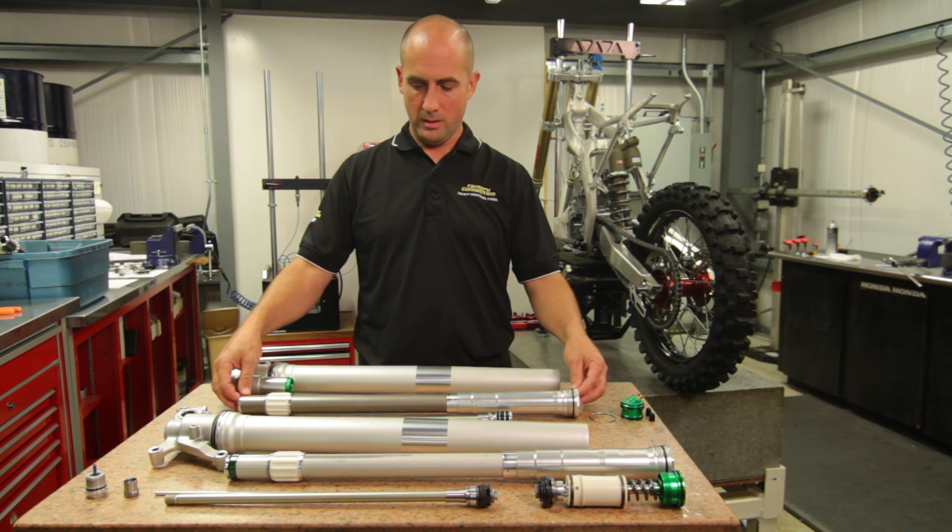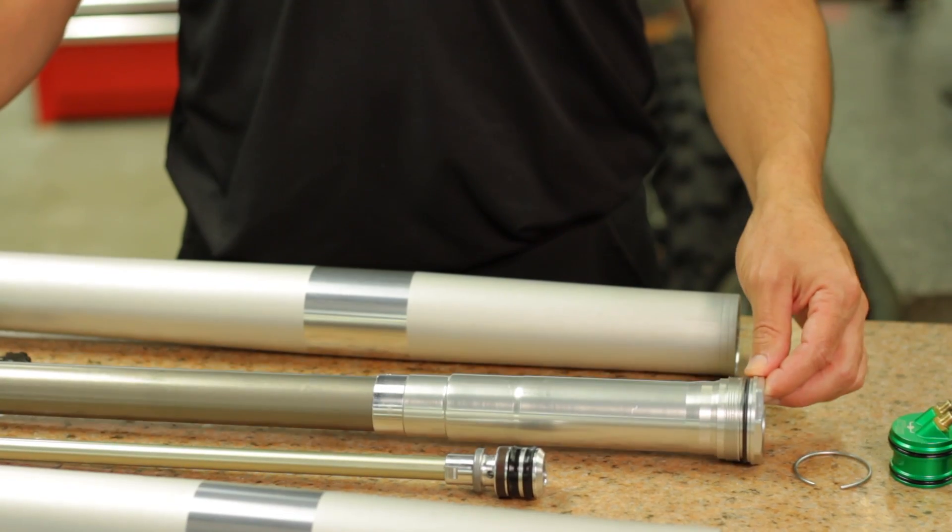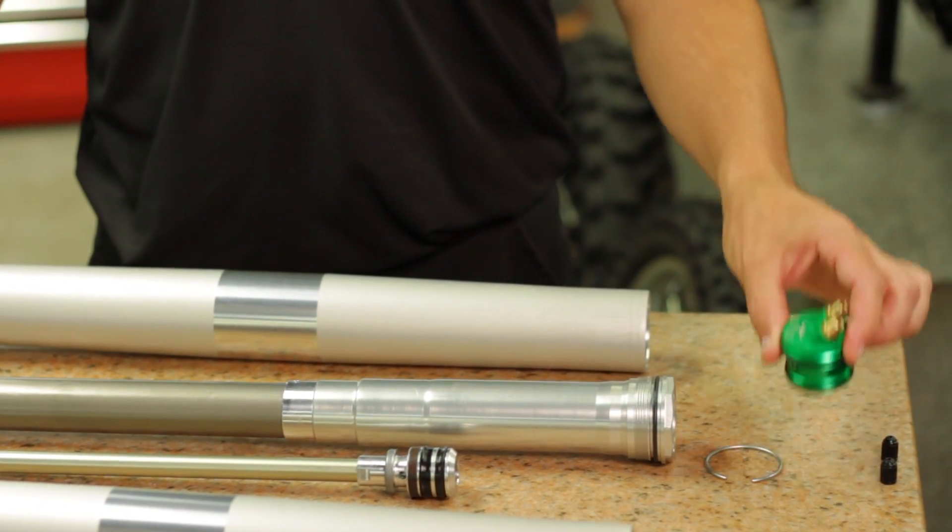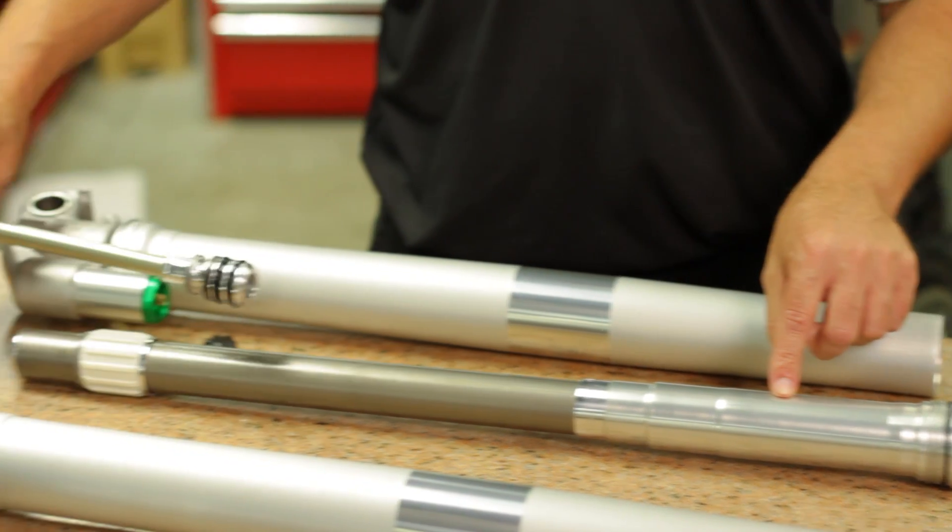Here we look at the cartridge that takes care of the spring function. As we put this cap in and charge the inner chamber, it actually exerts air pressure on this damper rod pushing it out.